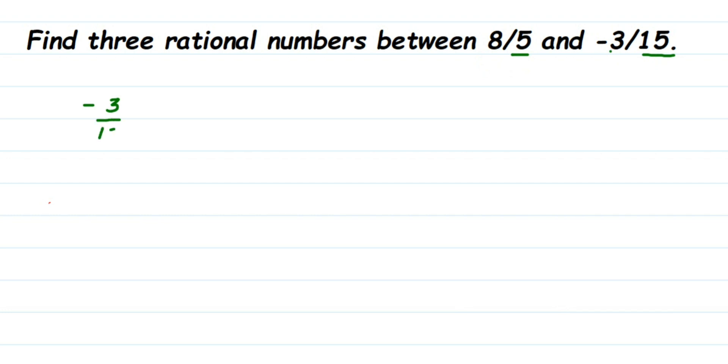We can cancel this in the three table. Three ones are three, and three fives are 15, so we'll get -1/5. So -3/15 is equal to -1/5. Instead of considering -3/15, we're going to take -1/5.